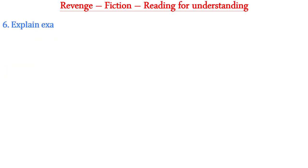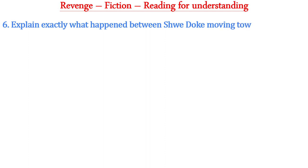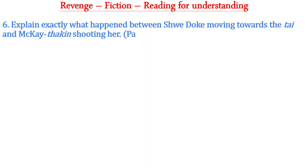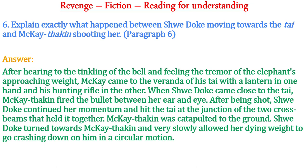Question six: Explain exactly what happened between Shuidok moving towards the thai and Mackay Thakin shooting her. This question is from paragraph six. The answer is: after hearing the tinkling of the bell and feeling the tremor of the elephant's approaching weight, Mackay came to the veranda of his tie with a lantern in one hand and his hunting rifle in the other. When Shuidok came close to the thai, Mackay Thakin fired the bullet between her ear and eye. After being shot, Shuidok continued her momentum and hit the thai at the junction of the two cross beams. Mackay Thakin was catapulted to the ground. Shuidok turned towards Mackay Thakin and very slowly allowed her dying weight to go crashing down on him in a circular motion.